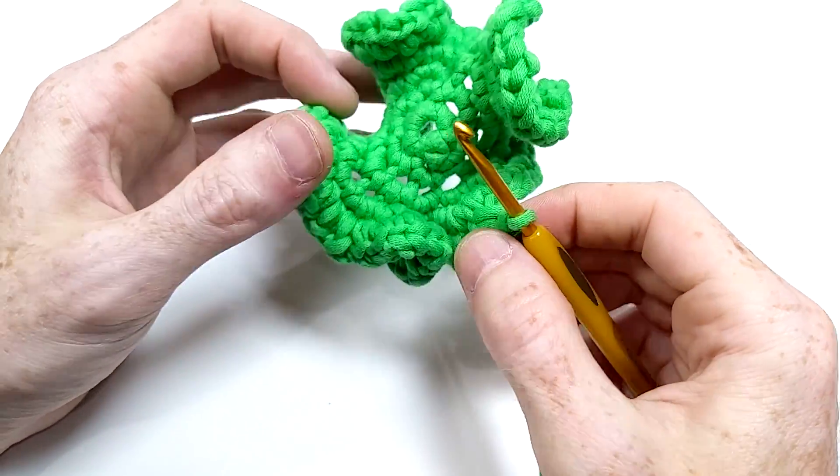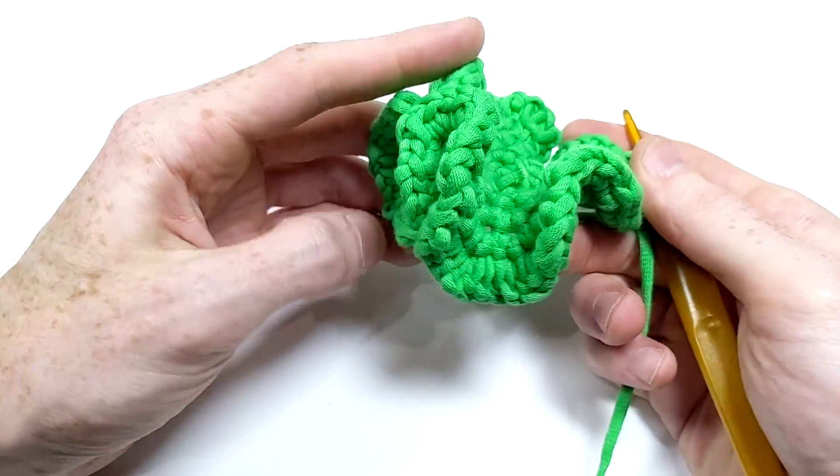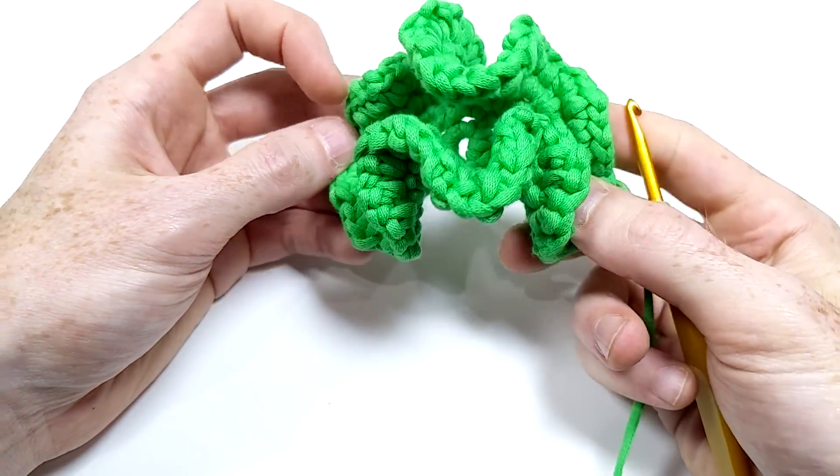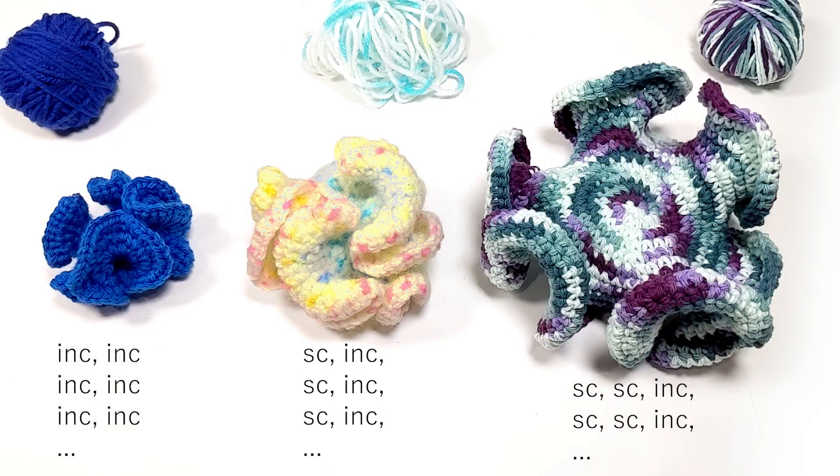This one took me just 20 minutes. It's a lot of curvature though, so if you want something bigger, you'll need to increase every other stitch, or even every third stitch. So for example, the pattern for this one is two single crochets, then an increase, then two single crochets, increase, and so on.